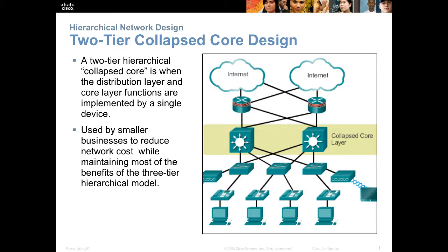If you have a smaller network, you might consider a collapsed core or two-tier design. We take the functionality of the distribution and core and combine them into a single layer, so we would have two layers: access and distribution-core.